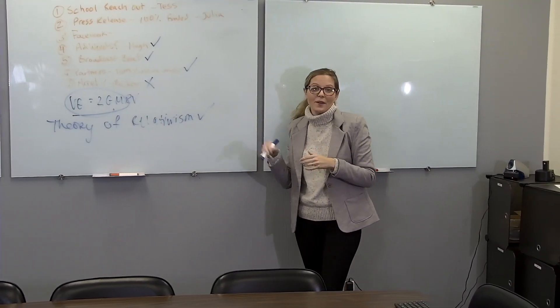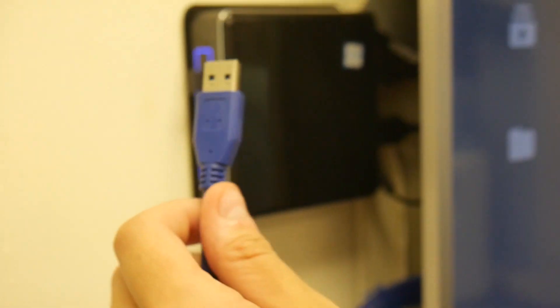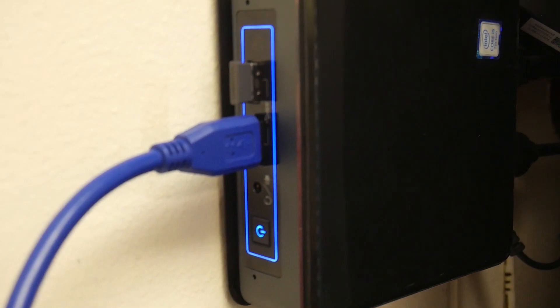To use this auto-tracking camera with Zoom, all you need to do is connect the camera to your computer using USB and select the camera as your webcam source.